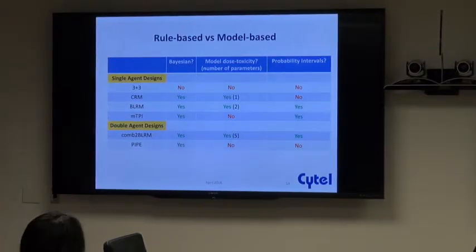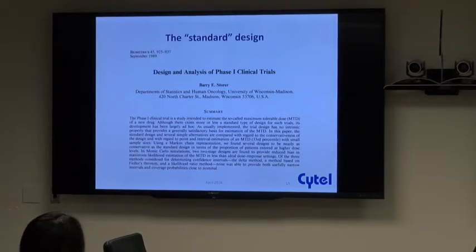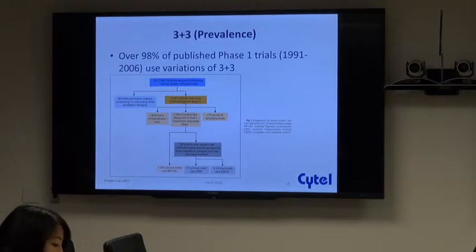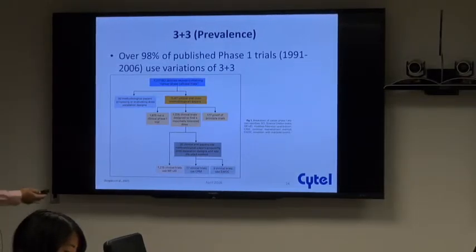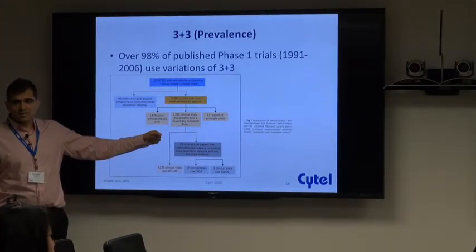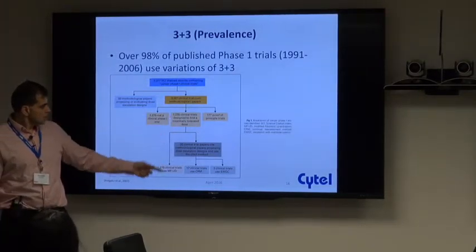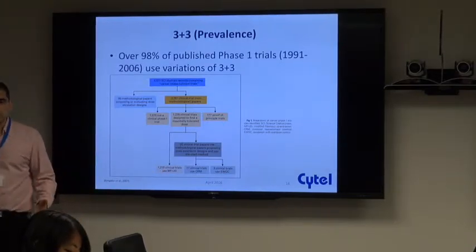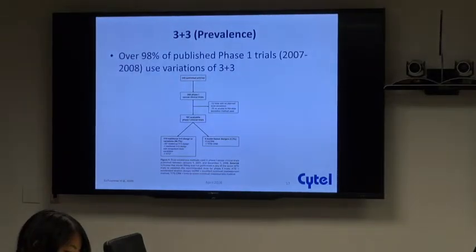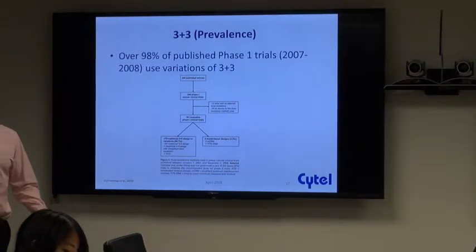The most prominent standard design is the three-plus-three, and it is the most prevalent. From a survey of phase one trials between 1991 and 2006, out of 1,235 trials designed to find a maximum tolerated dose, 1,215 of them used a variant of this method. This trend continued for the next couple of years and it remains a popular approach.